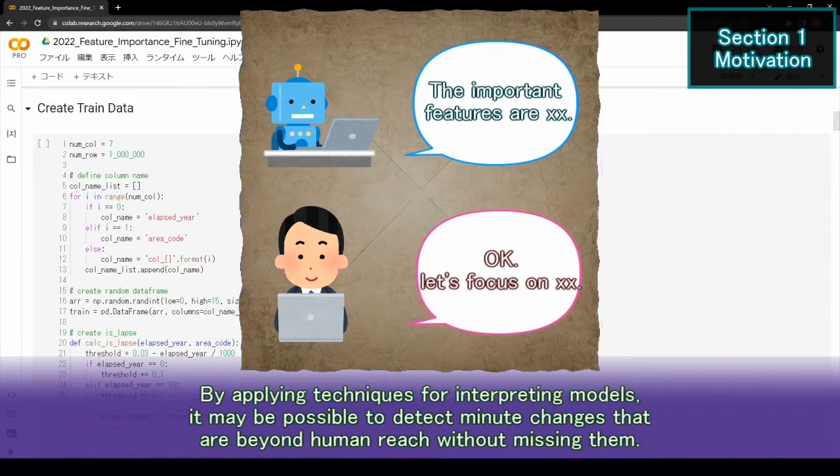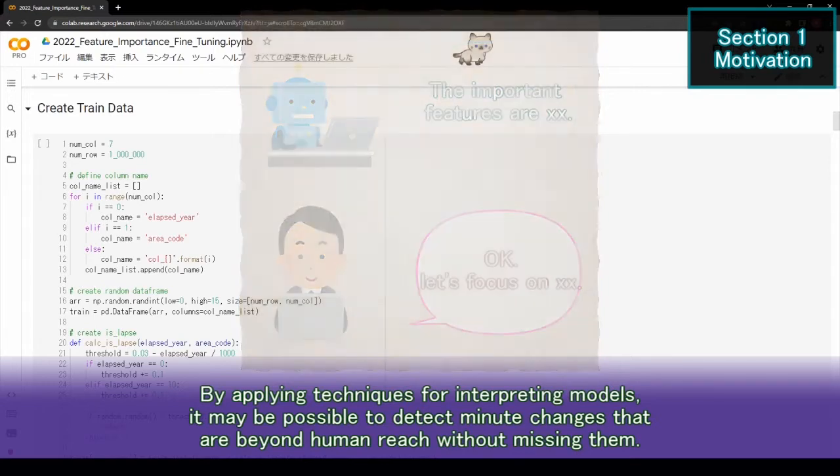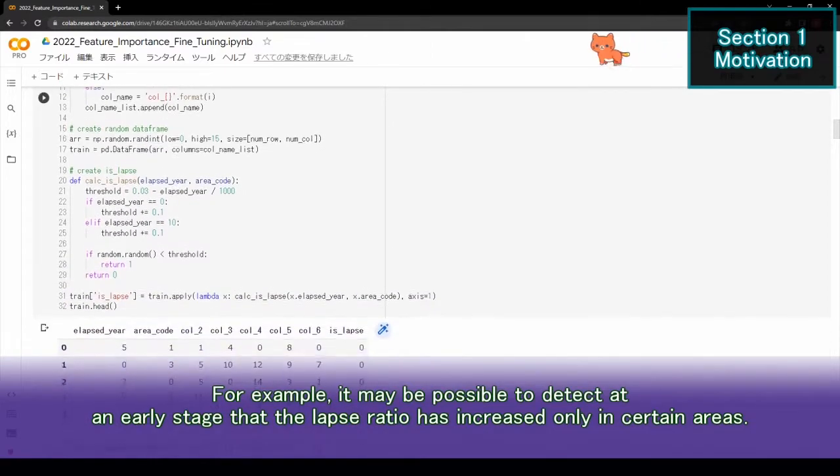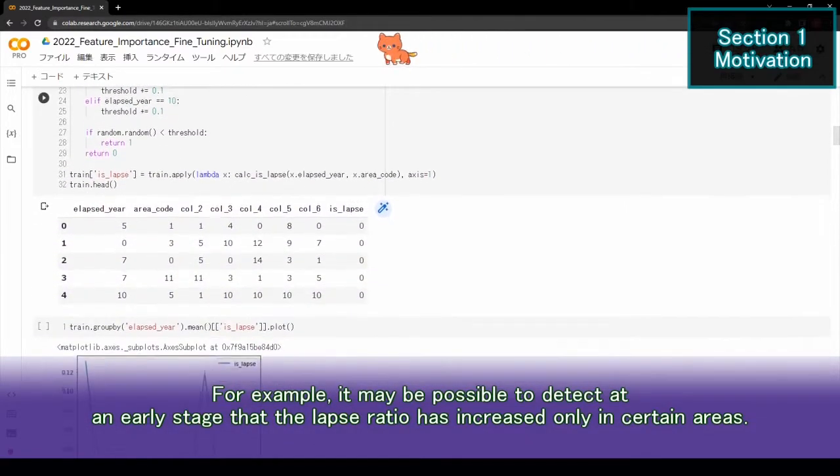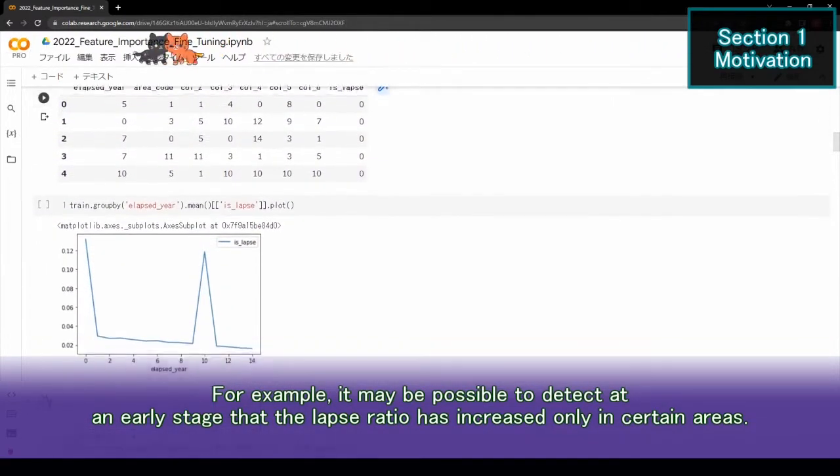By applying techniques for interpreting models, it may be possible to detect minute changes that are beyond human reach without missing them. For example, it may be possible to detect at an early stage that the lapse ratio has increased only in certain hours.